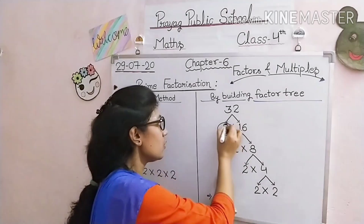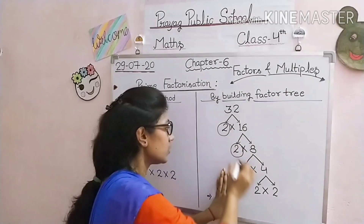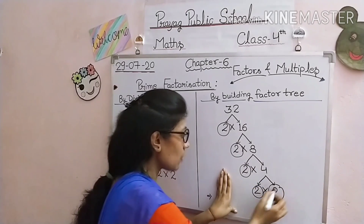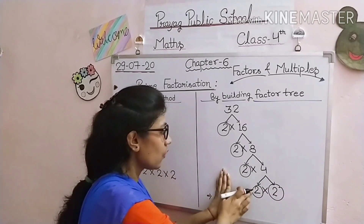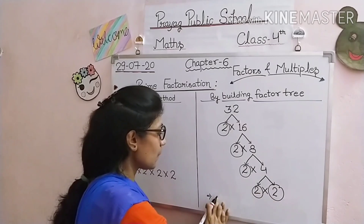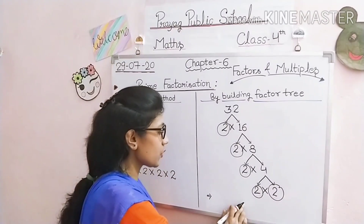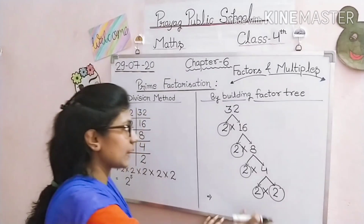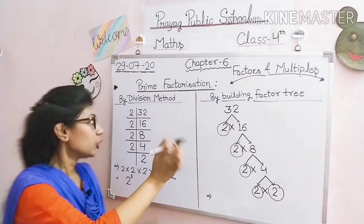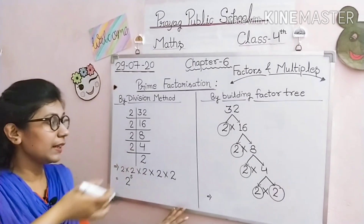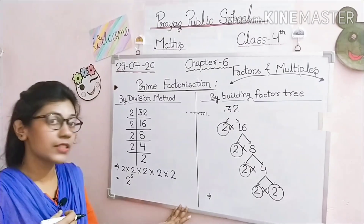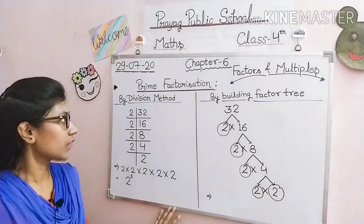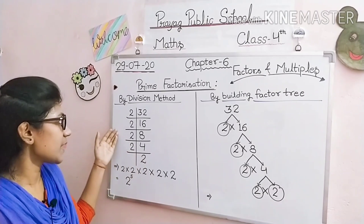32 के by building factor tree method से prime factorization find out हो गया। जो prime numbers हैं उन्हें circle कर देते हैं: 2, 2, 2, 2, 2 — यानी 5 twos मिले। तो 2 × 2 × 2 × 2 × 2 को हम 5 times multiply करें तो result 32 मिलेगा। Division method और factor tree method दोनों से prime factorization find out करना सीख लिया।